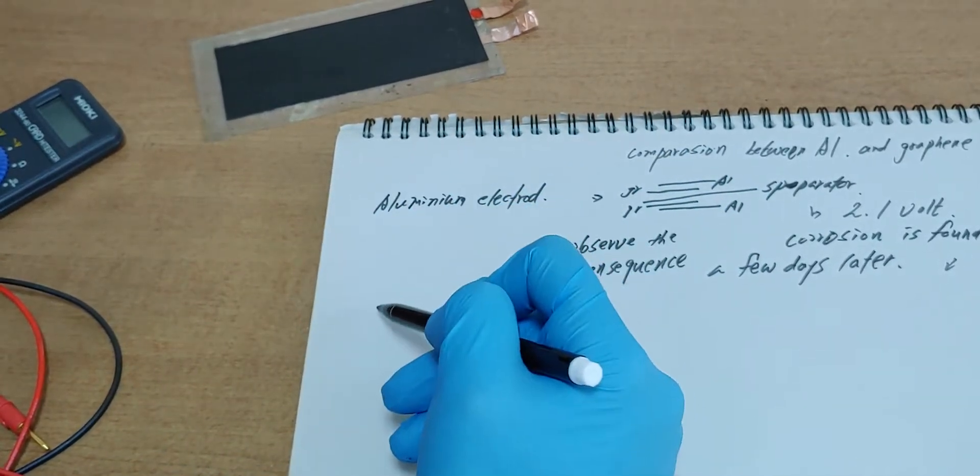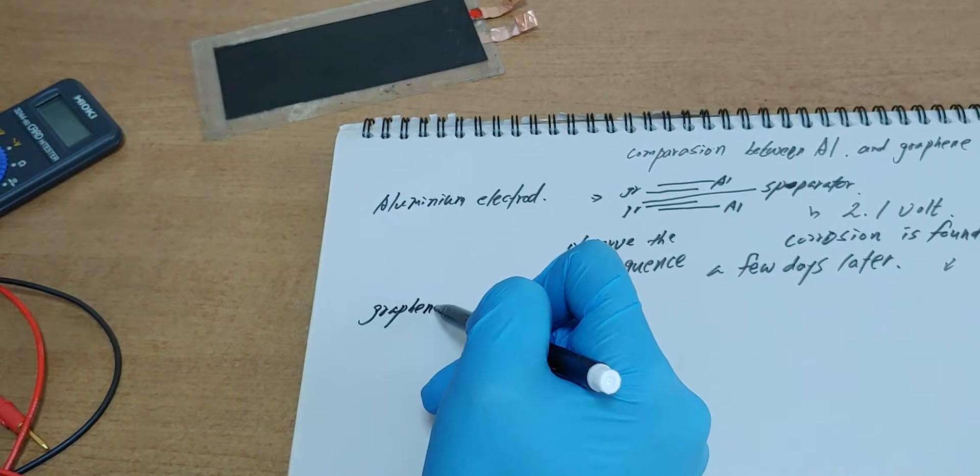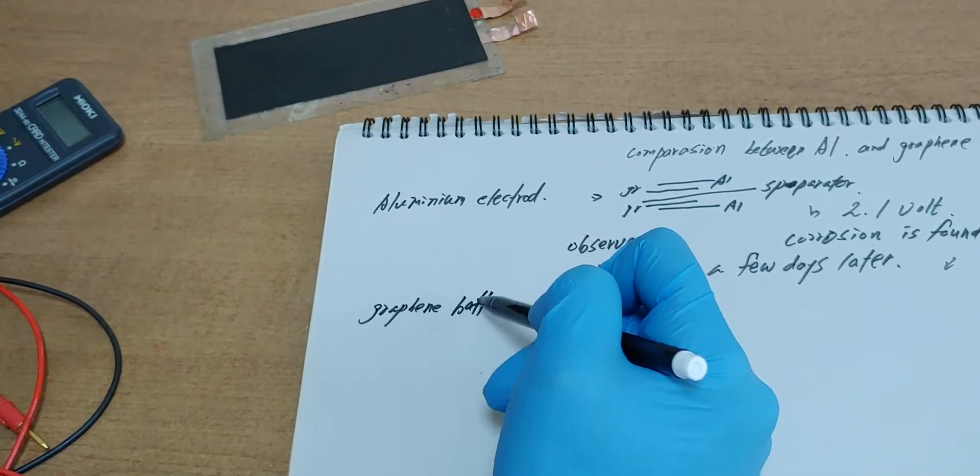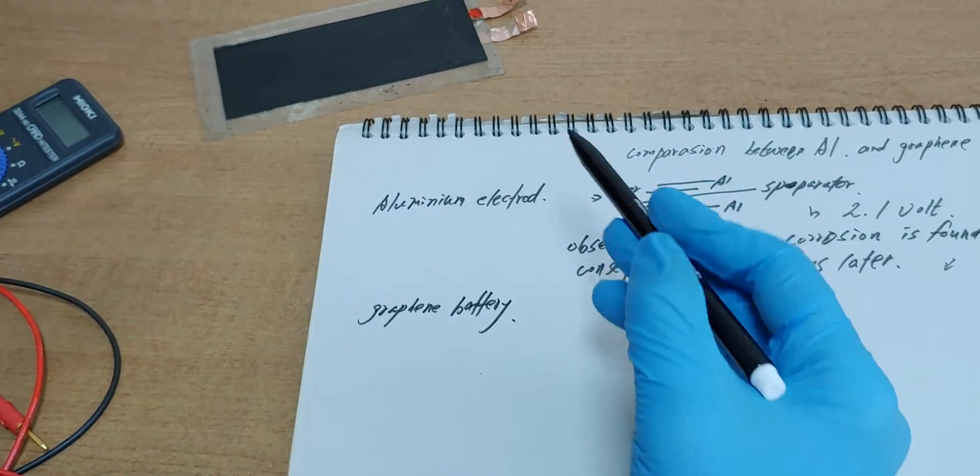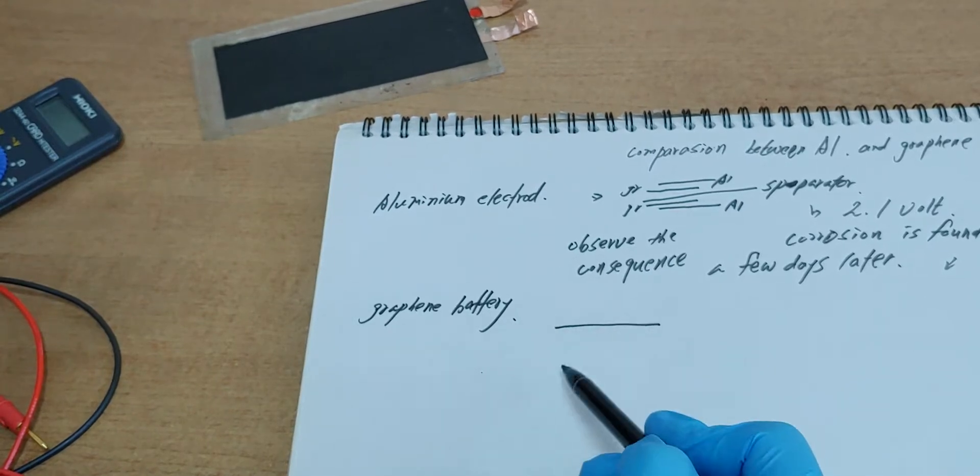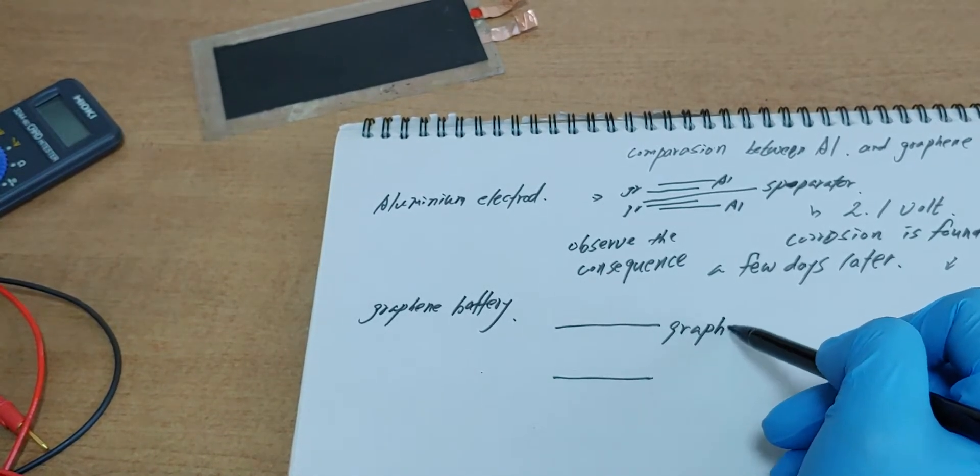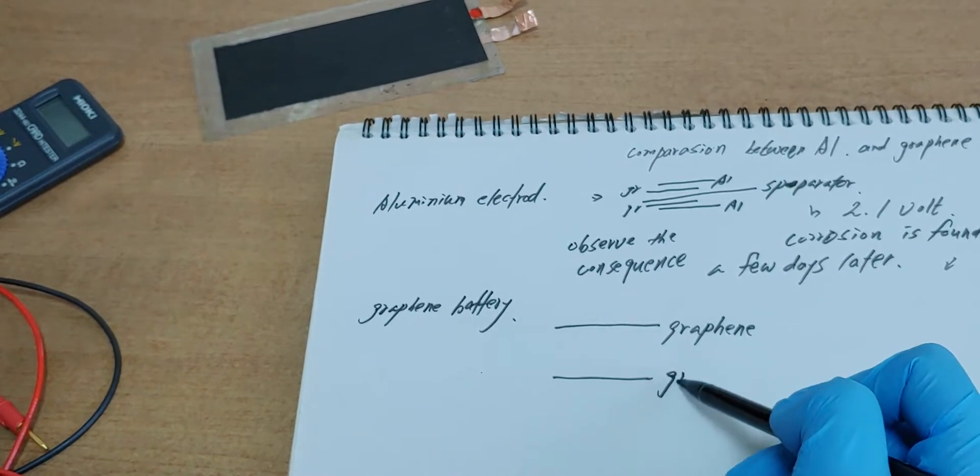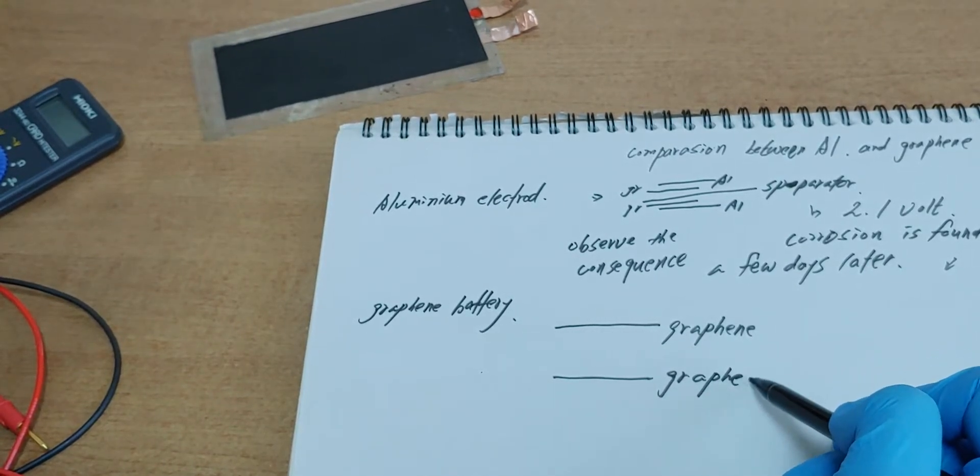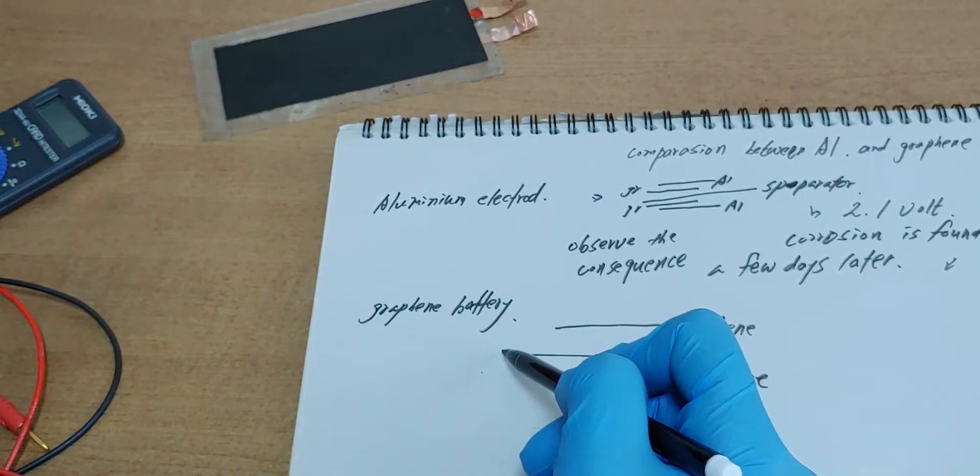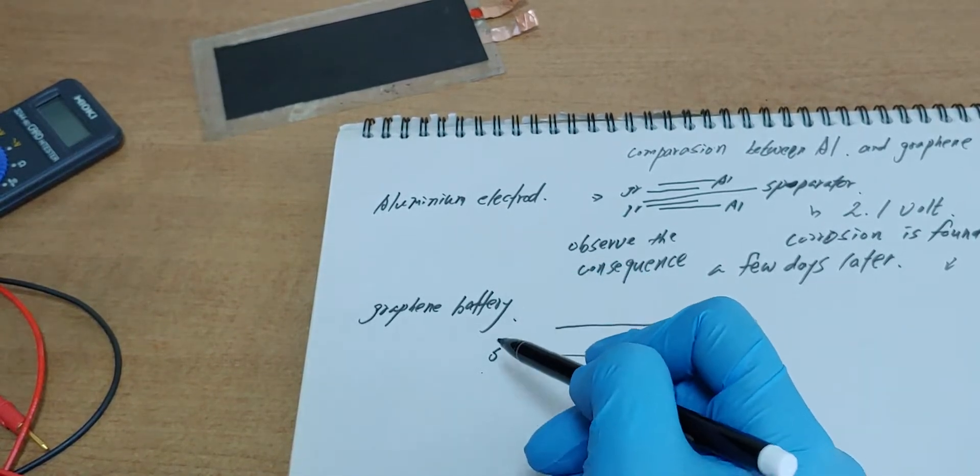Graphene battery. Graphene, graphene, graphene separator. Structure is really simple.